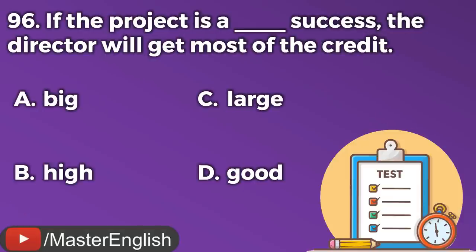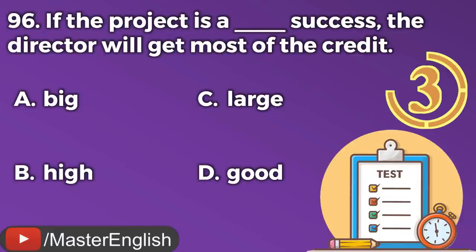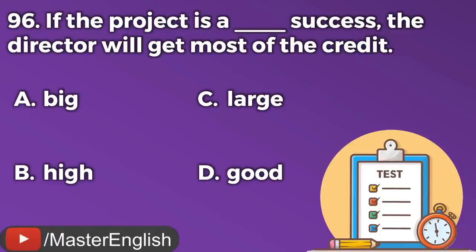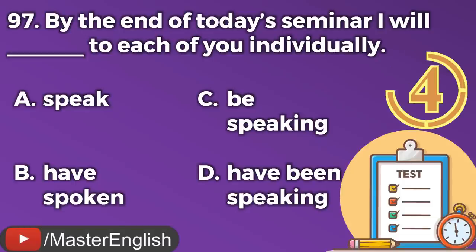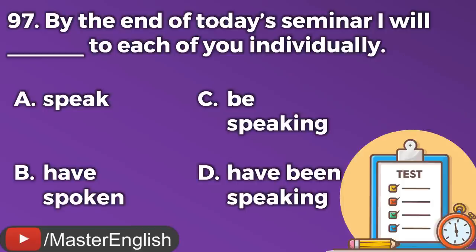Question number ninety-six. If the project is a ___ success, the director will get most of the credit. A: Big. B: High. C: Large. D: Good. The correct answer is A: Big. If the project is a big success. Question number ninety-seven. By the end of today's seminar, I will ___ to each of you individually. A: Speak. B: Have spoken. C: Be speaking. D: Have been speaking. The correct answer is B: Have spoken. I will have spoken to each of you individually.